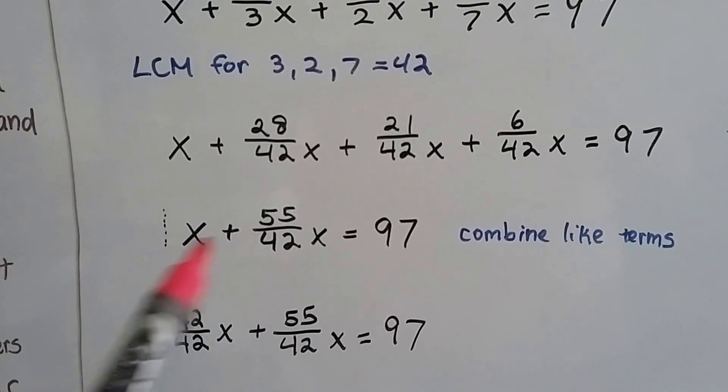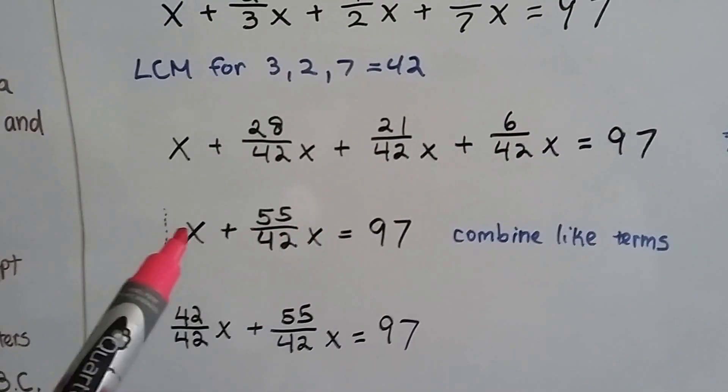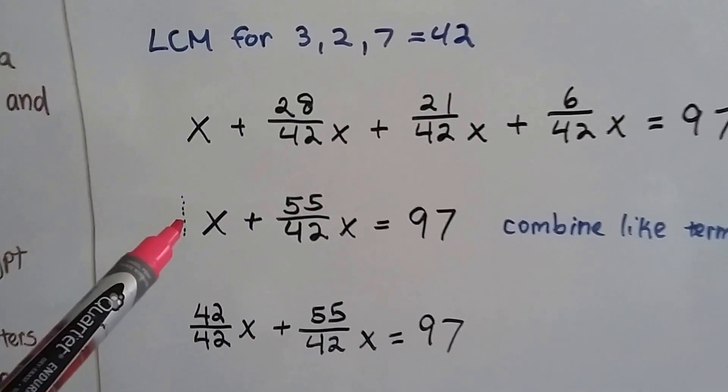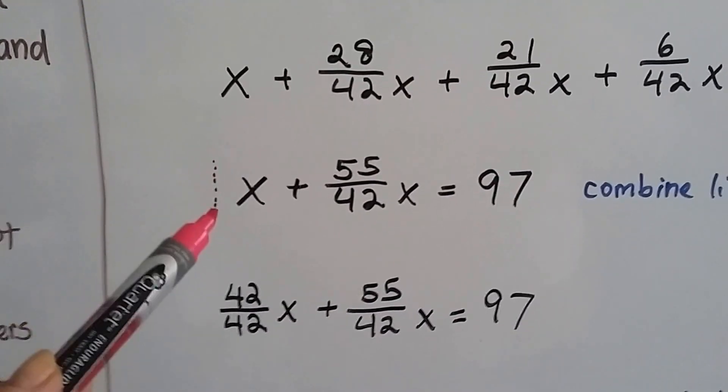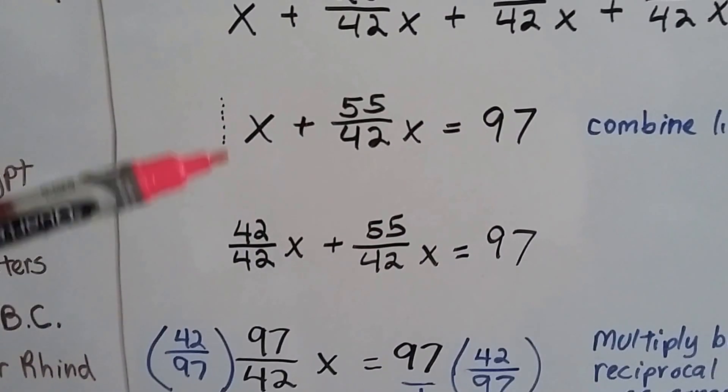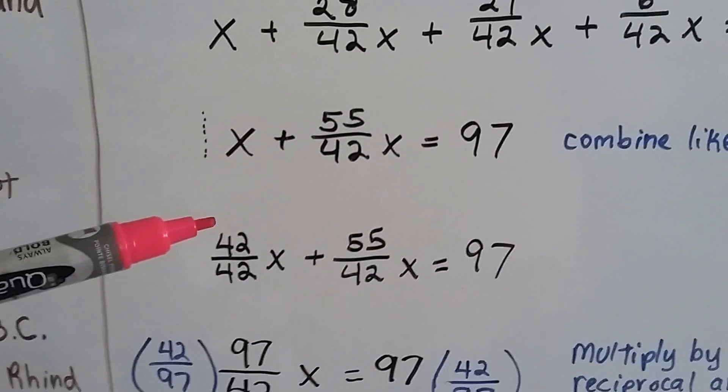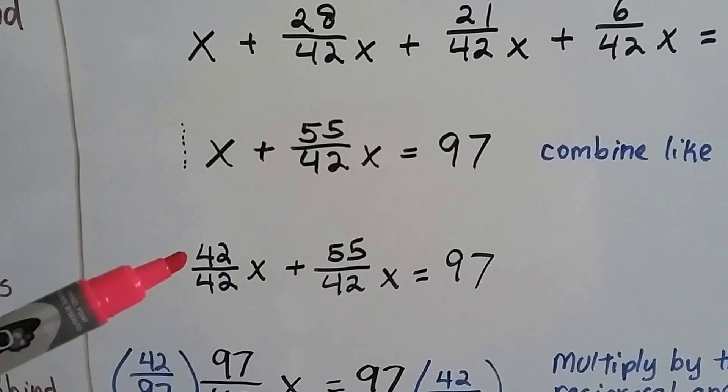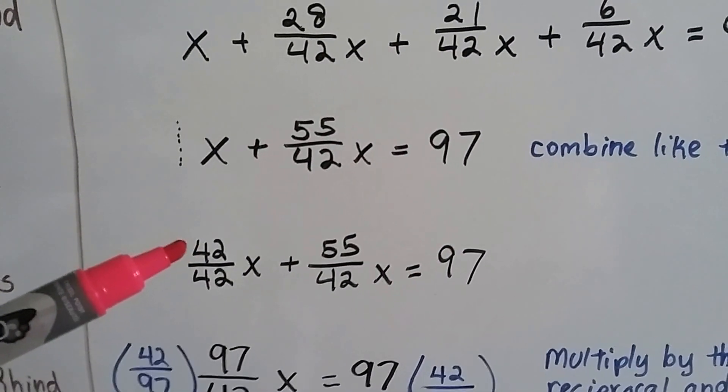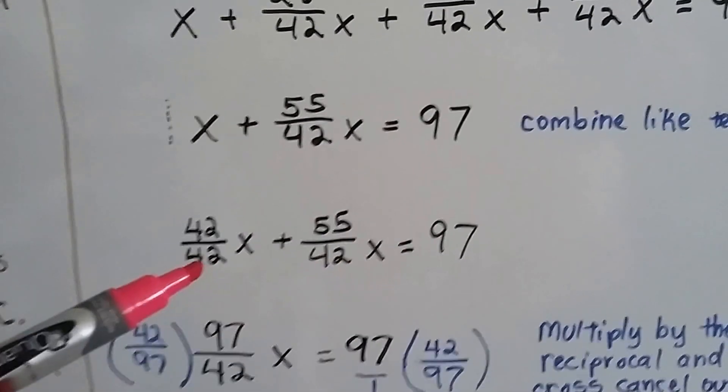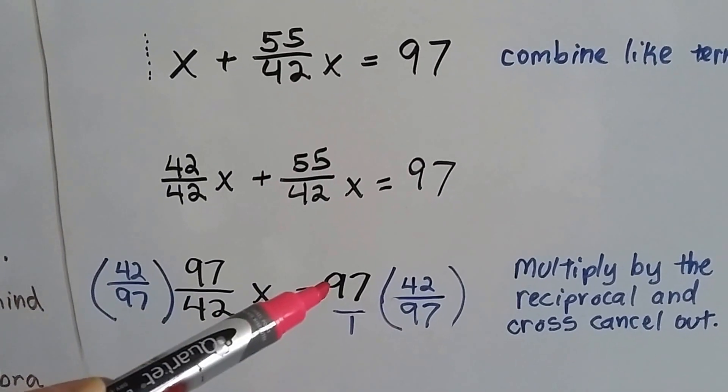We can combine these like terms for these values of x. And technically, there's a 1 in front of this one, isn't there? It's identity property. It's our buddy, the invisible 1. And we can change it to 42 over 42 to keep it as a fraction. And that way, we end up with 97 over 42x equals 97.